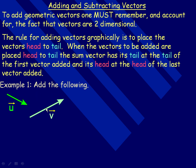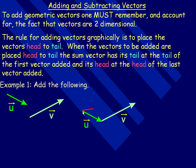Let's say we have these two vectors. Remember, when you redraw a vector, you have to draw it the same length, parallel, and in the same direction as the original — otherwise it's not the same vector. So I'm going to make a copy of the u vector. I take the v vector and put its tail right there and draw out my v vector. The sum vector has its tail at the tail of the first vector and its head at the head of the last vector added, so that is the vector u plus v.